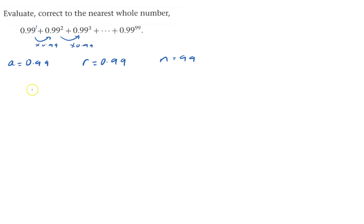I need to work out the sum of 99 terms. The formula is a times (1 minus r to the n) all over (1 minus r).